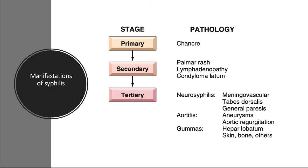Once introduced into the body, the organisms rapidly disseminate to distant sites through lymphatics and the blood, even before the appearance of lesions at the primary inoculation site. This widespread dissemination accounts for the protean manifestations of the disease, which in adults can be divided into primary, secondary, and tertiary stages.